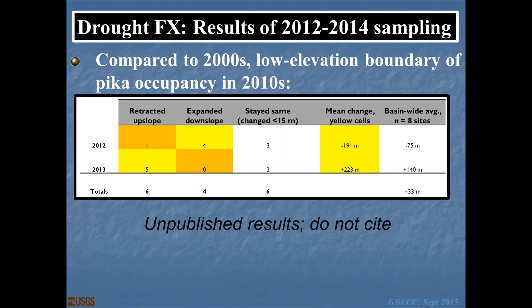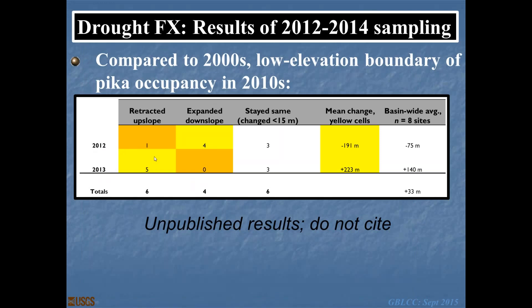Looking quickly at drought: 2011 was a strong precipitation year, and the following year we saw a one-year lag in the low elevation boundary — at four sites, pikas expanded downslope, and upslope at only one site. After the strong drought year of 2012, they retracted upslope at five sites and downslope at none. Abundance did not delay one year — in the 2012 drought, abundances were about half of what they were in the 2000s. At many sites, we had a relatively good precipitation year in 2013, and abundance was about 1.4 times what it was in the 2000s.